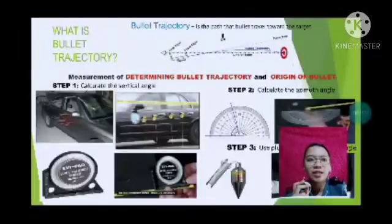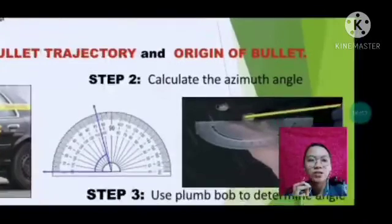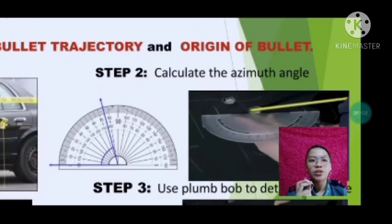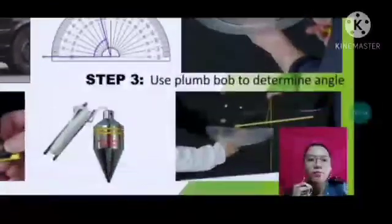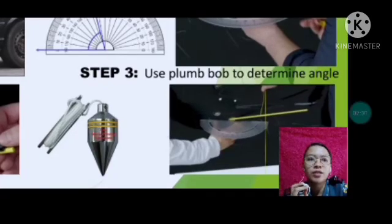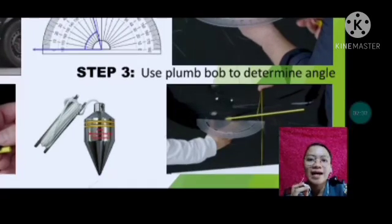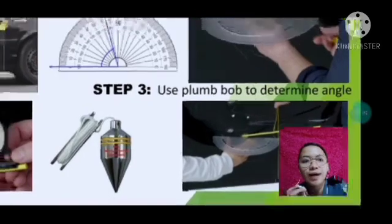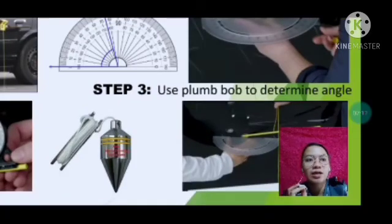The next step is to calculate the azimuth angle. They use a protractor to determine that angle. Then step three is using a plumb bob to determine the angle — once you have used the protractor, you use a plumb bob to determine the exact angle and direction where the bullet or barrel came from.